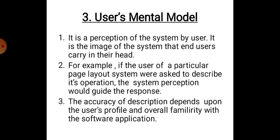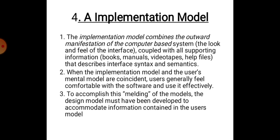The User's Mental Model considers what the user's mental makeup regarding the user interface is. It is the perception of the system by the user — the image of the system that end users carry in their head. For example, if a user of a particular page layout system were asked to describe its operation, the system perception would guide the response. The accuracy of the description depends upon the user's profile and overall familiarity with the software application.